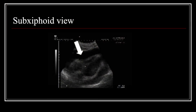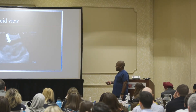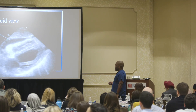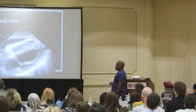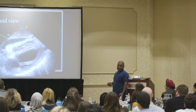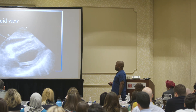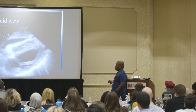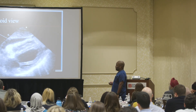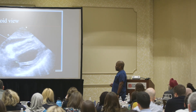Here's a sub-xiphoid view showing a very large effusion around the heart. You can see the right ventricle is collapsed and you cannot see the right atria at all. You can see the left ventricle and left atria. Here's an important point: tamponade is a clinical diagnosis — you cannot diagnose tamponade on ultrasound. You can say 'large effusion with right ventricle collapse and I cannot see the right atria,' but don't call it tamponade.